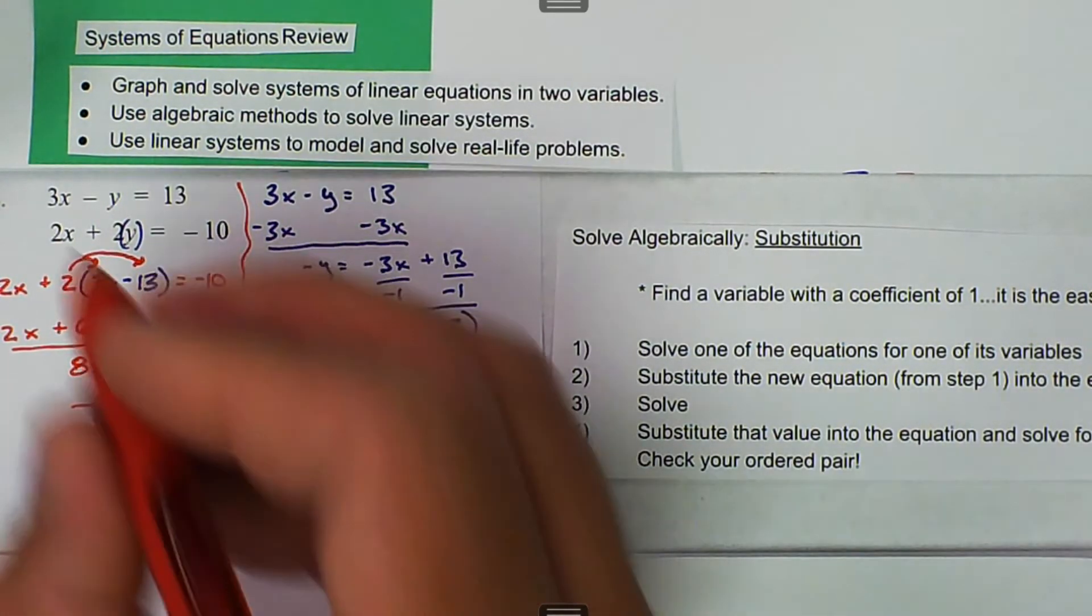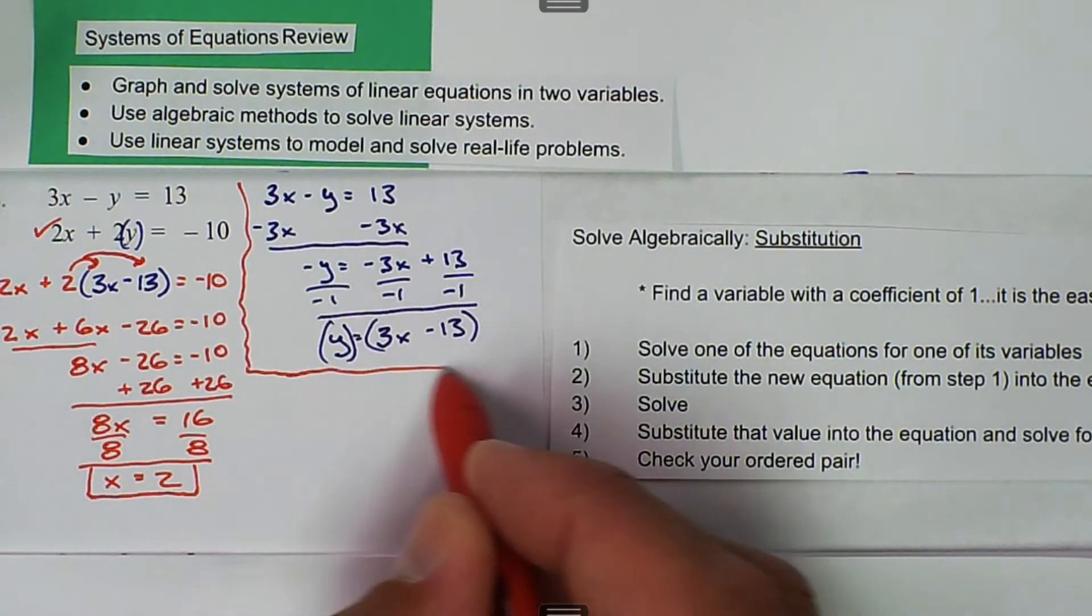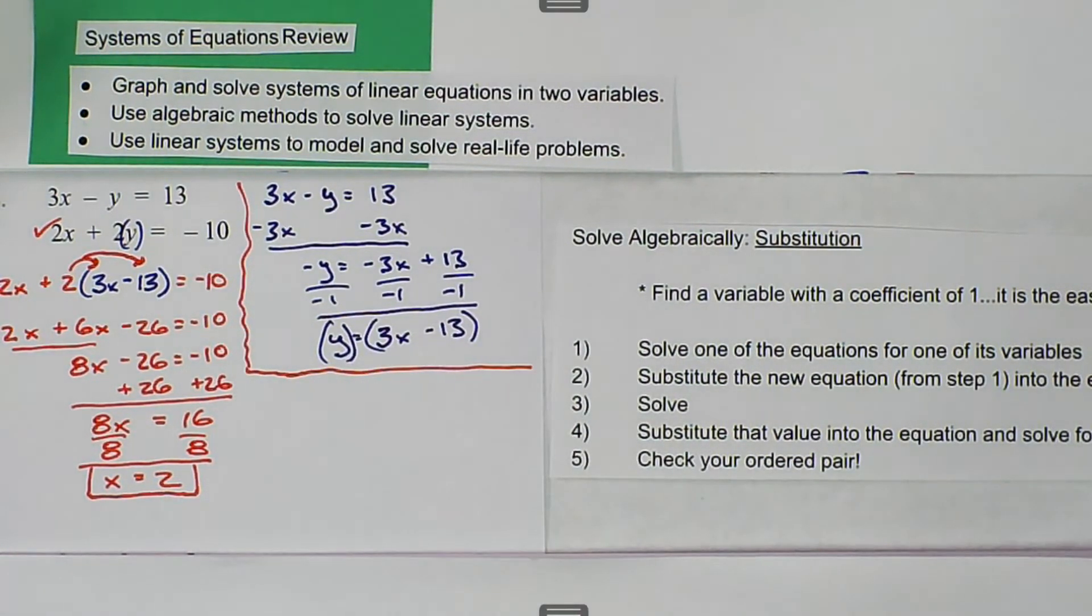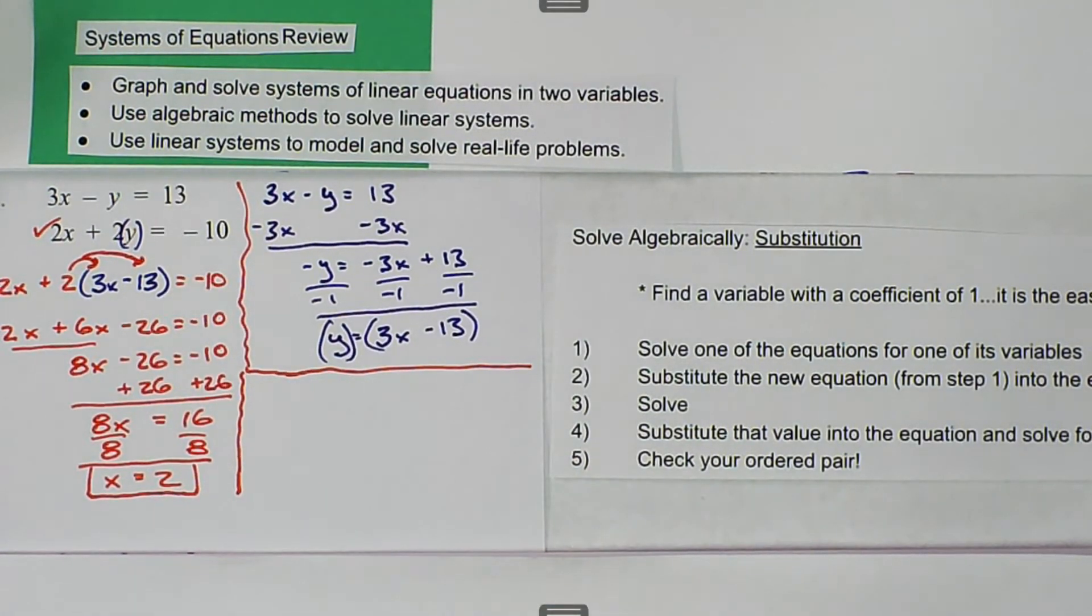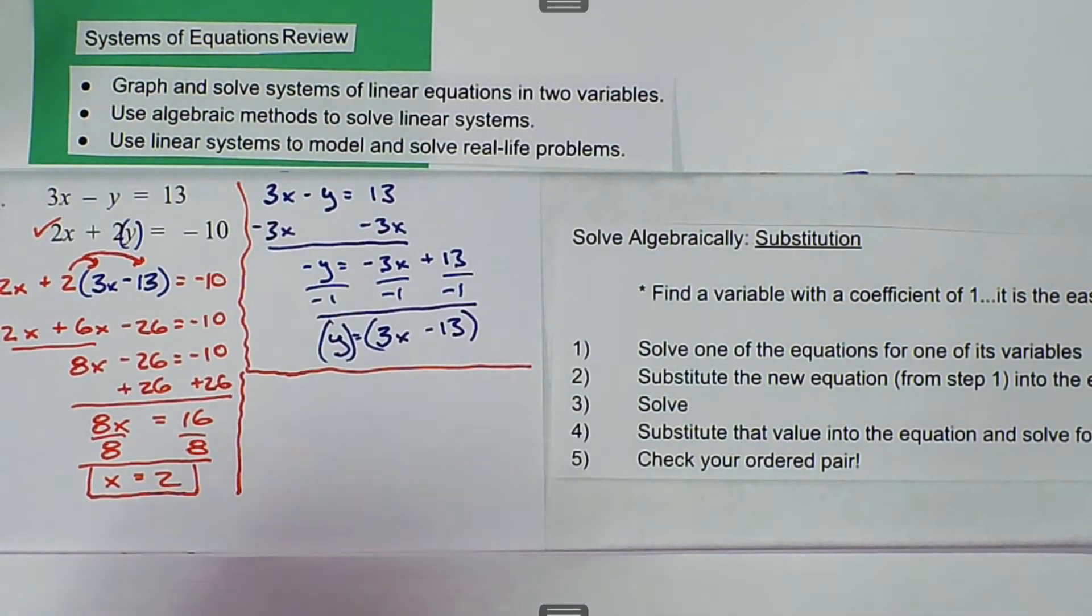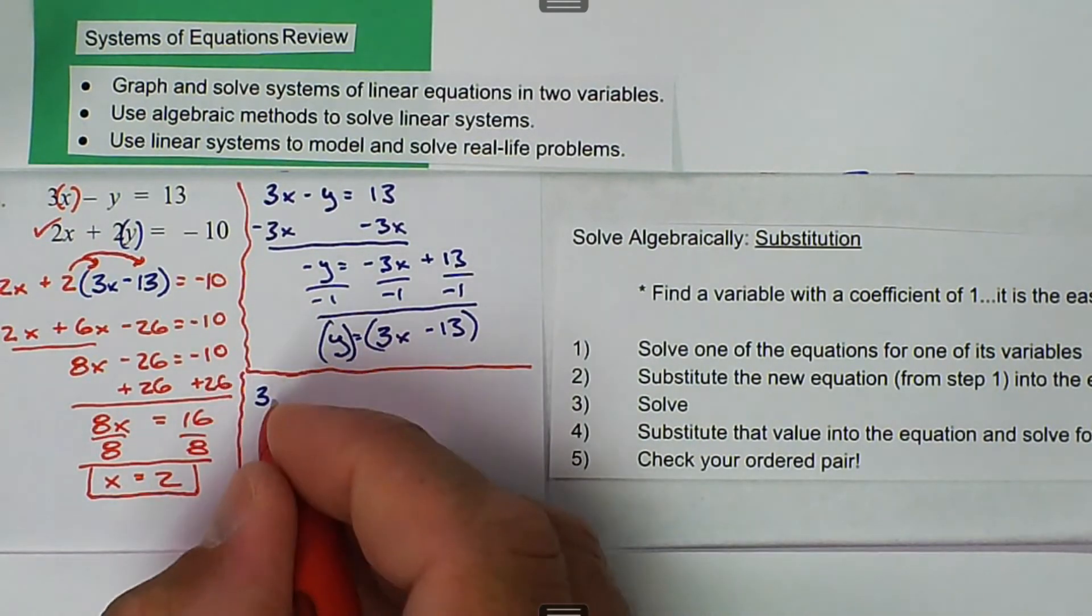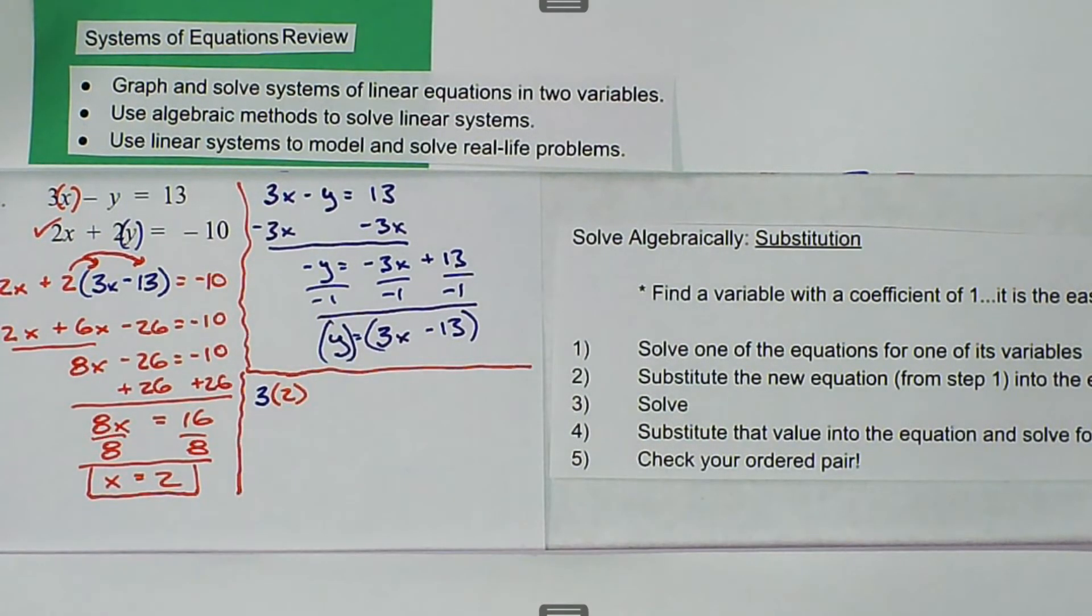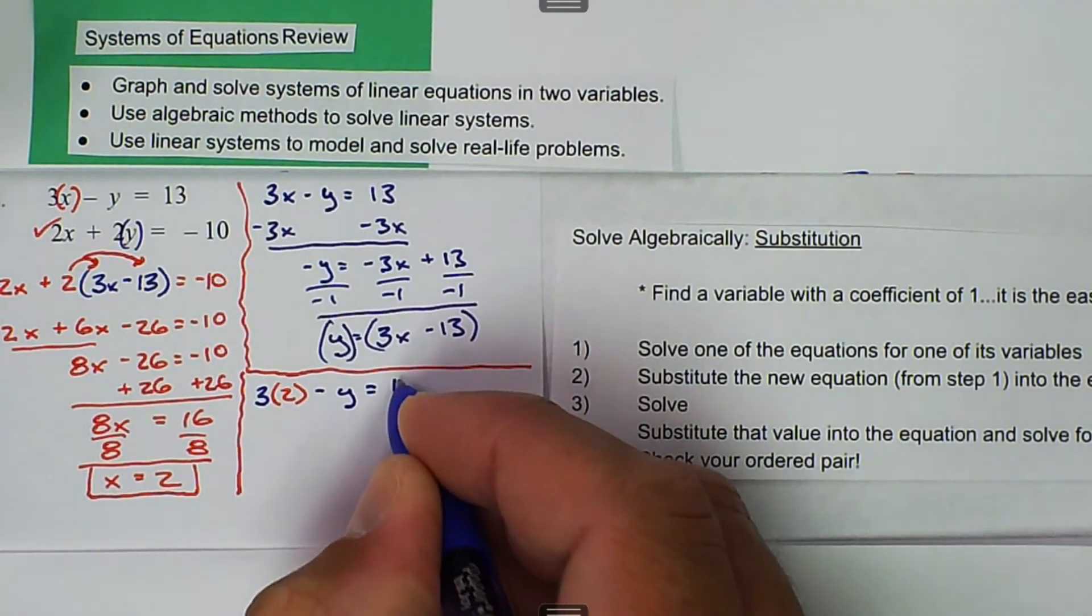Now we know what x is. We already used this bottom equation, so now we want to use the top equation. We want to figure out what the y variable is. I'm going to take my x value and substitute in for the x variable. So 3, and then we know that x is 2, or we think x is going to be 2, minus y is equal to 13.